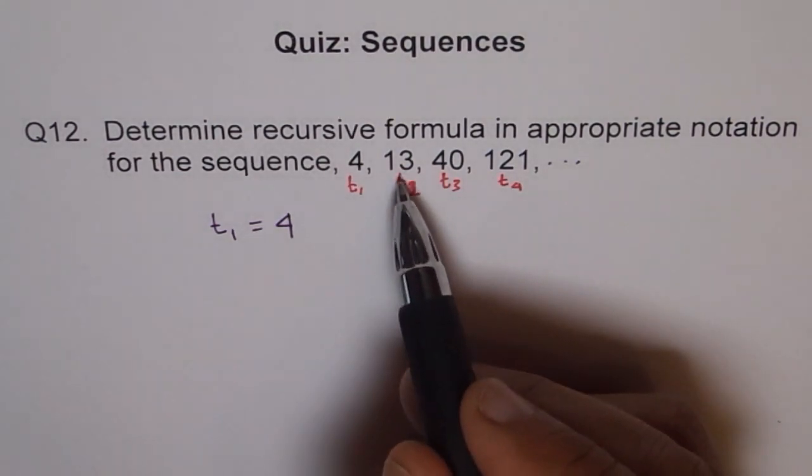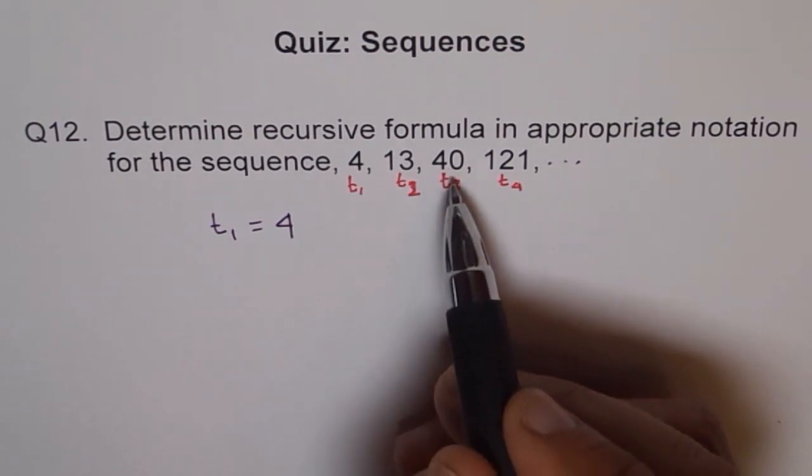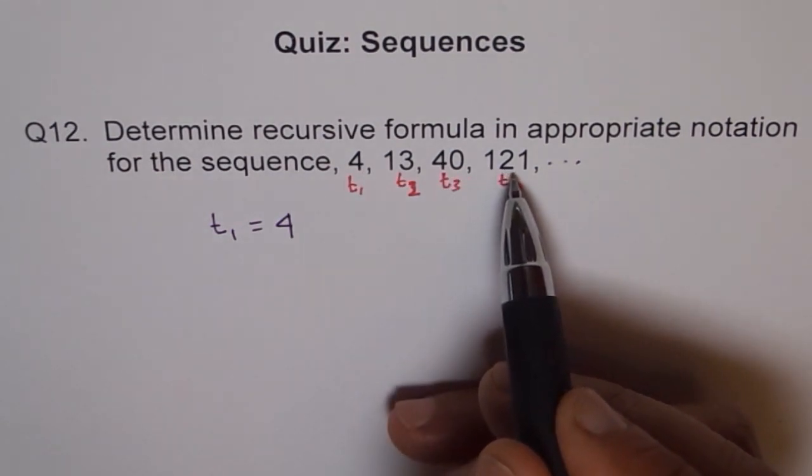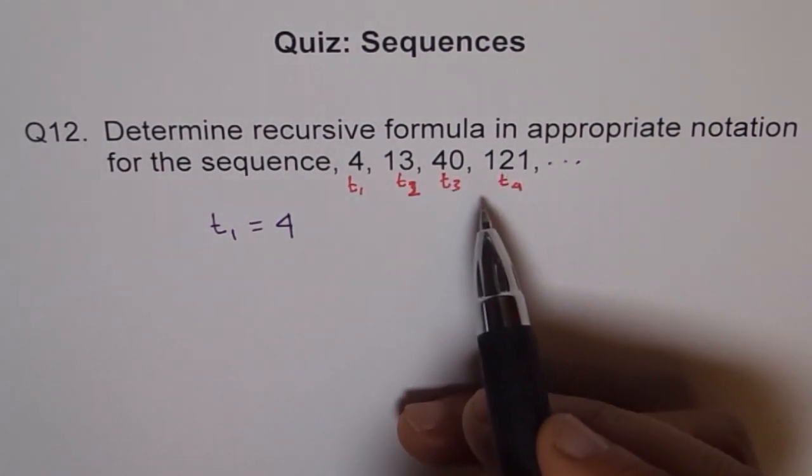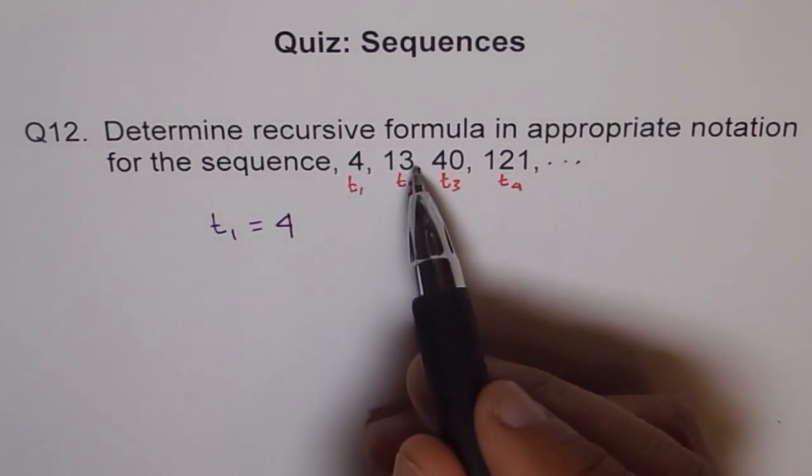13 times 3 is 39 and plus 1 is 40. 40 times 3 is 120 plus 1 is 121. So we kind of get a pattern. 4 times 3 is 12 and plus 1 is 13.